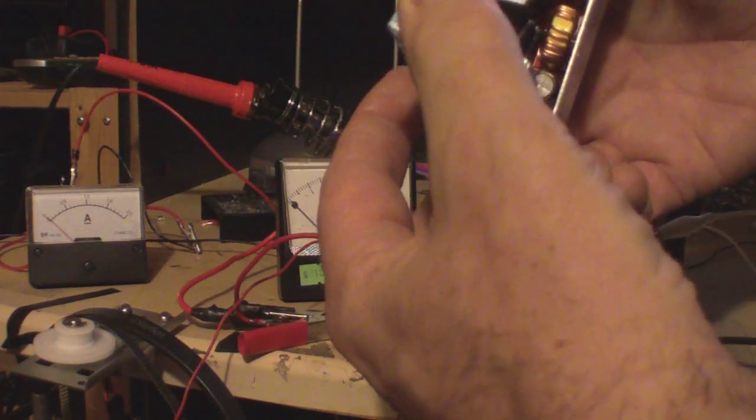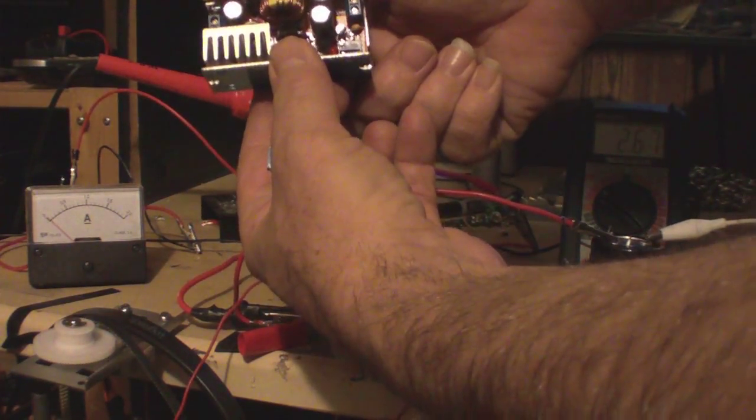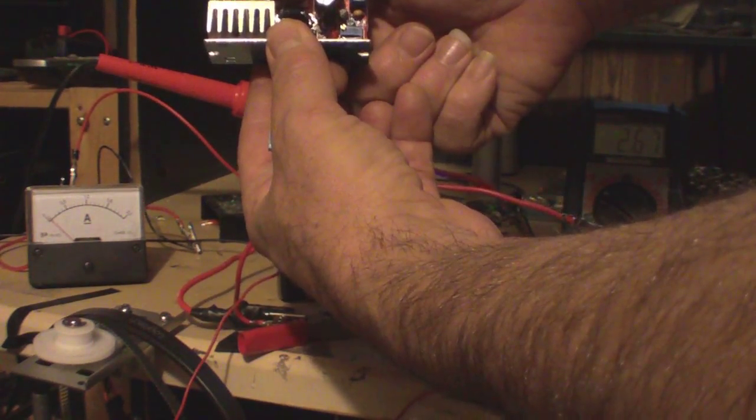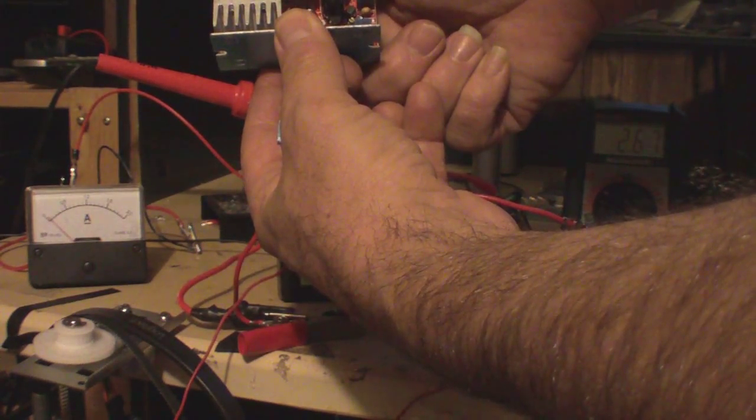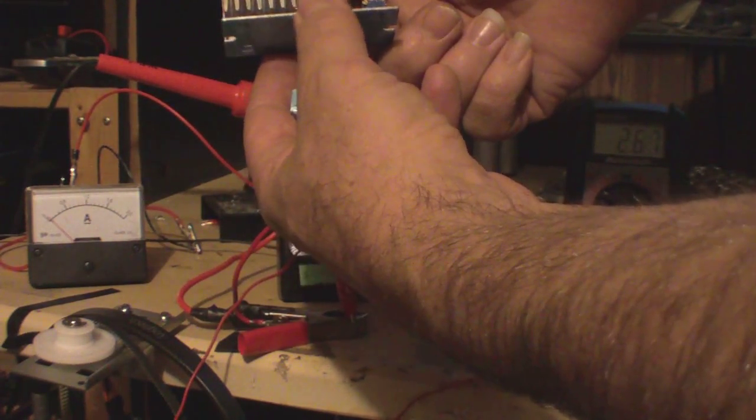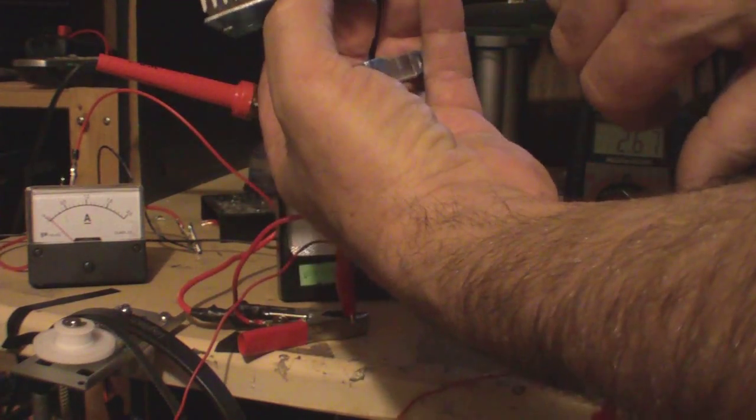So this little top pops off. And there you have it, your inductor, your MOSFET, your controller, and then you have your two potentiometers.